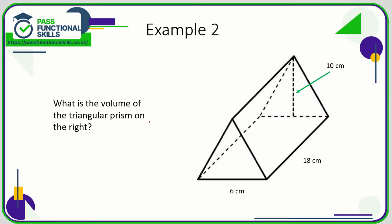Here we have a triangular prism. The volume of any prism is the front face multiplied by its depth. Now the front face is a triangle. The formula for the area of a triangle is base times height divided by 2.